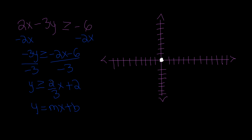So two-thirds is our slope. Remember, we always graph our y-intercept first. m is the slope and b is the y-intercept. So graph the y-intercept first, which is 2 — the y-intercept goes on the y-axis. Now we have to graph the slope, which is two-thirds. So we're going to go up, because slope is rise over run — so up 2 over 3. And since this is a greater than or equal to symbol, our line is going to be solid. So our line is going to look something like this.